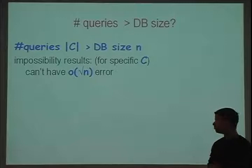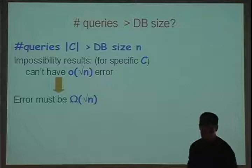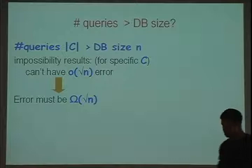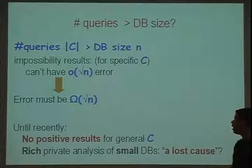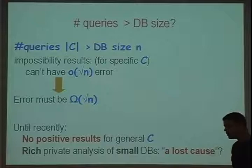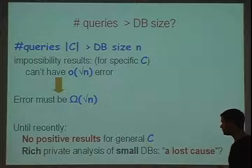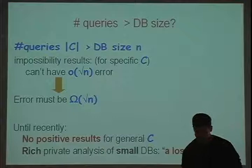What about asking more queries than the database size? Impossibility results say we can't have less than square root of n error, but maybe that's okay — square root of n error is still pretty small. The question is whether we can get something around square root of n error when the number of queries is large. Until very recently, there were no positive results for general classes of counting queries, and it was an open question whether you can even hope to do a rich analysis on a small database while preserving individuals' privacy.